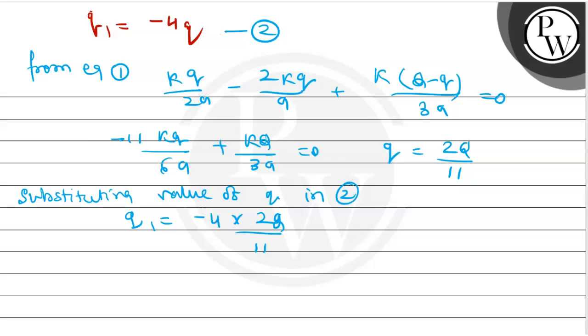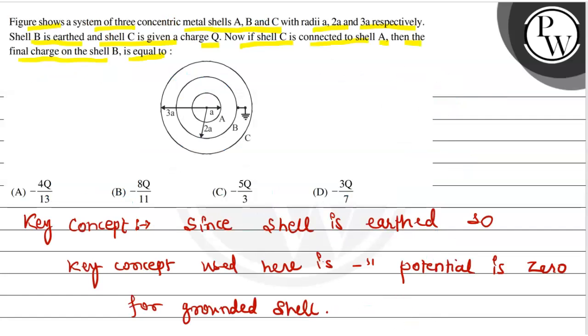So this value is minus 8Q upon 11. Finally, Q1 value is minus 8Q upon 11. This is the calculated value, so you can see which option matches. This is minus 8Q by 11, option B is the right option. I hope you understood it well, best of love, thank you.